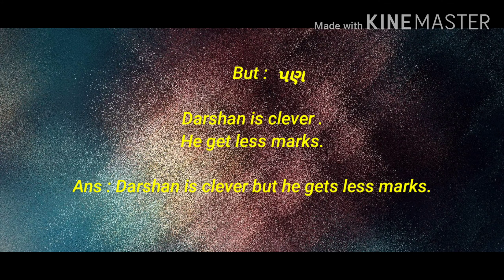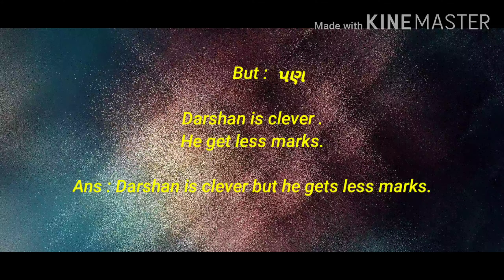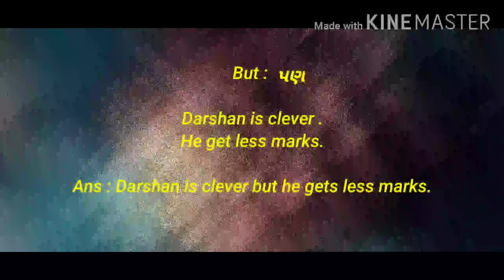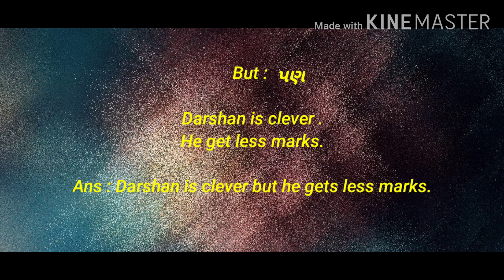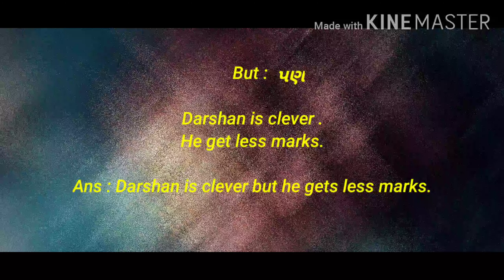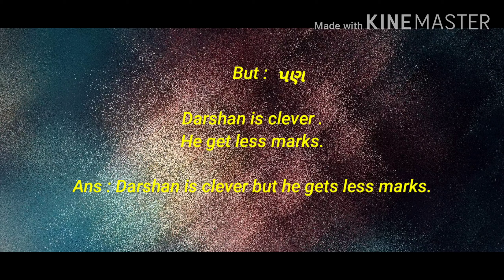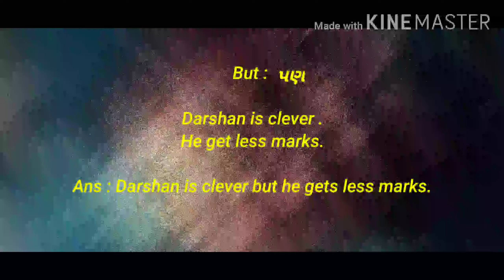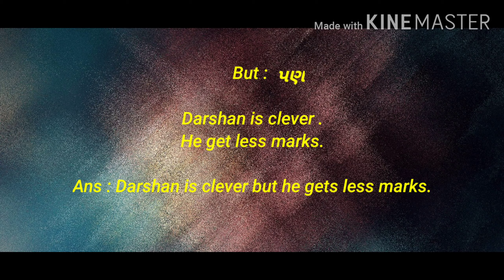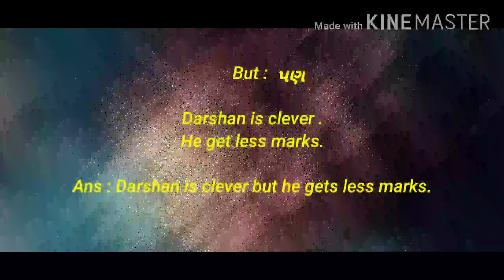When the second sentence shows contrast or opposition to the first sentence, we join them using BUT. For example: 'Darshan is clever' and 'He gets less marks.' Since Darshan is clever, he should get more marks — but he gets less marks. That contrast is expressed using BUT.